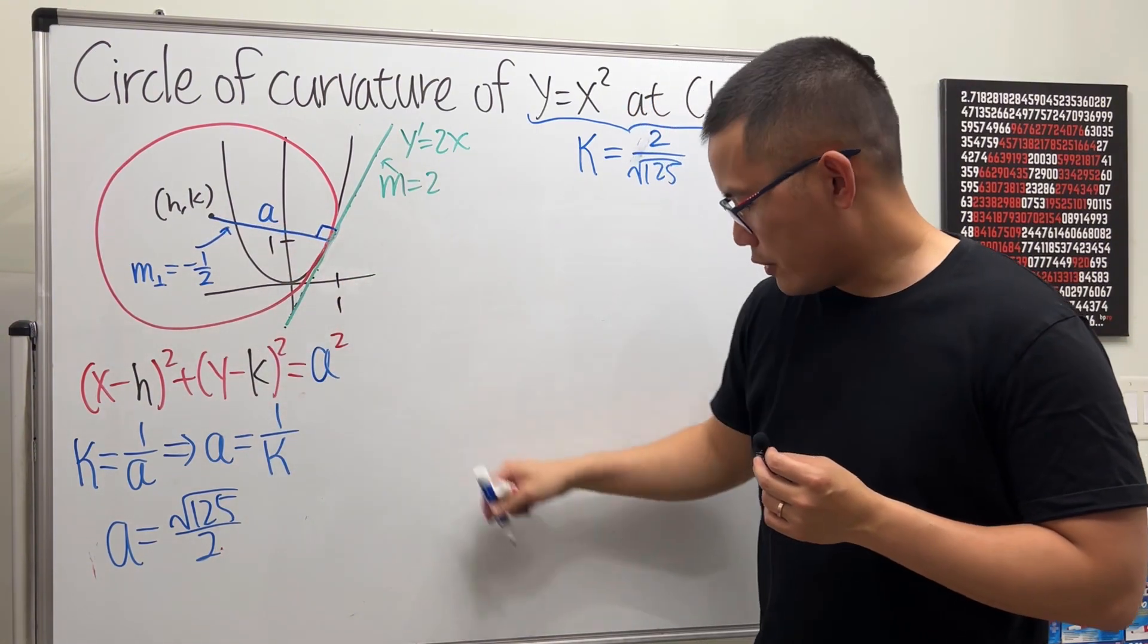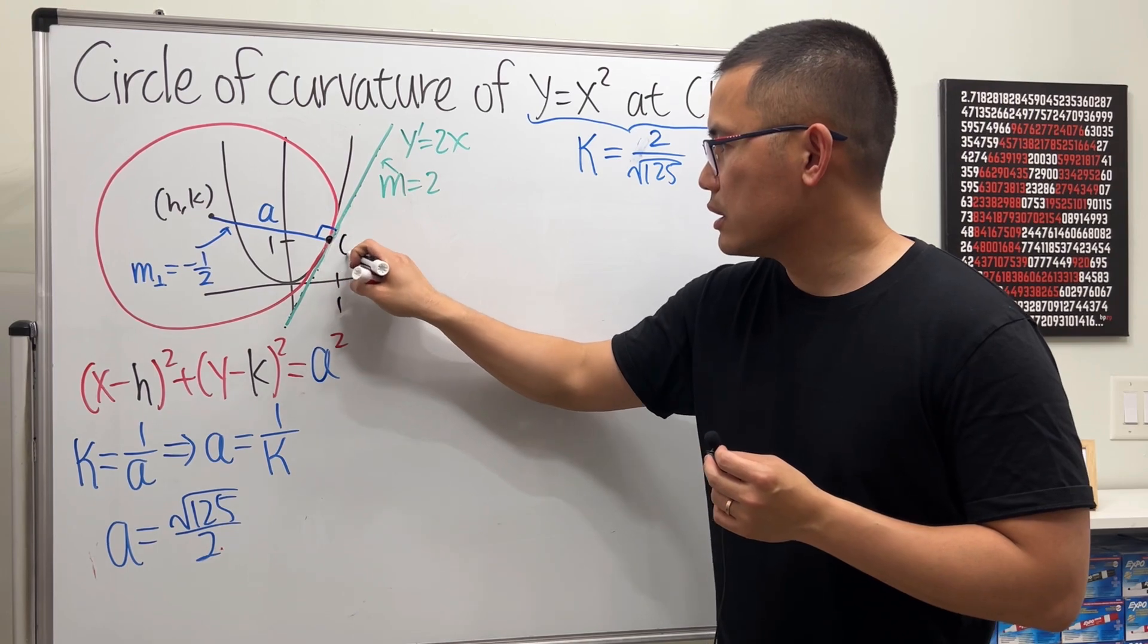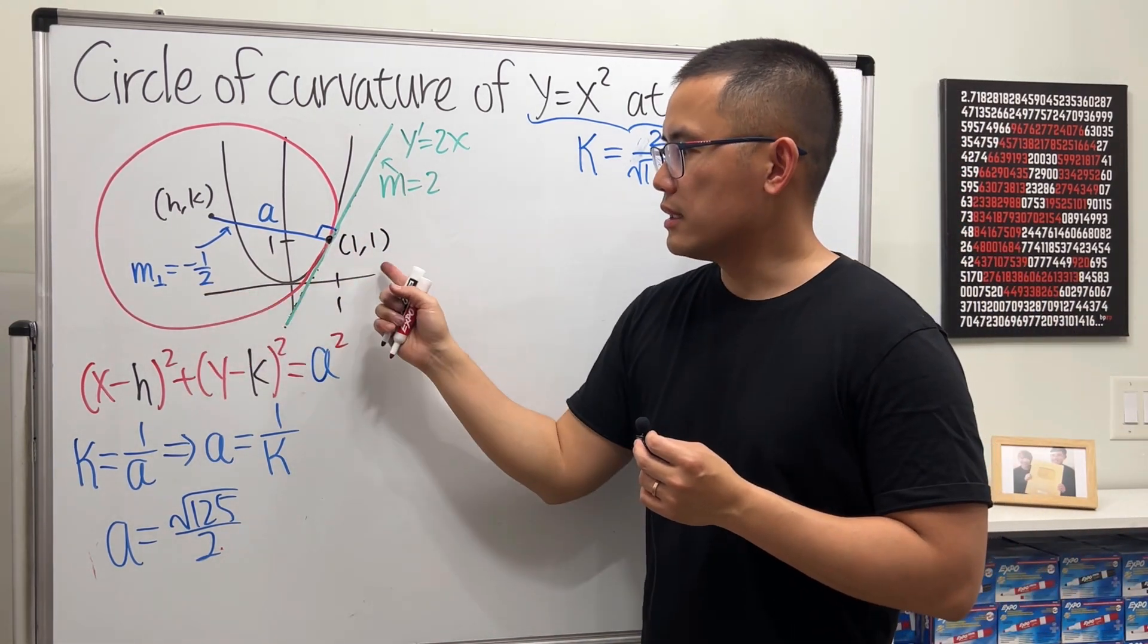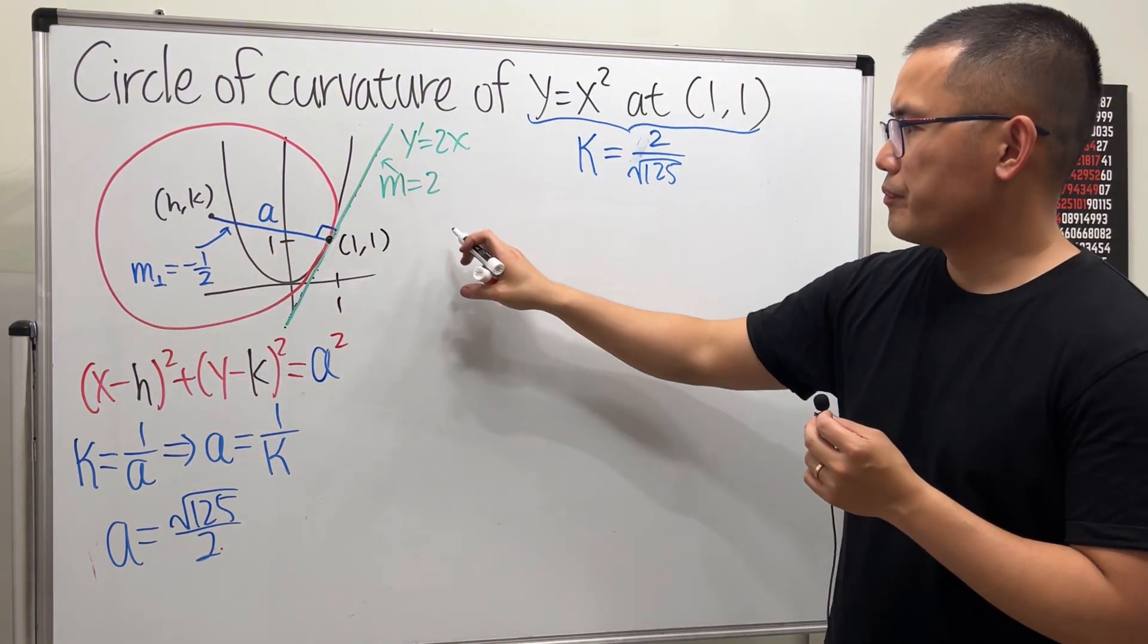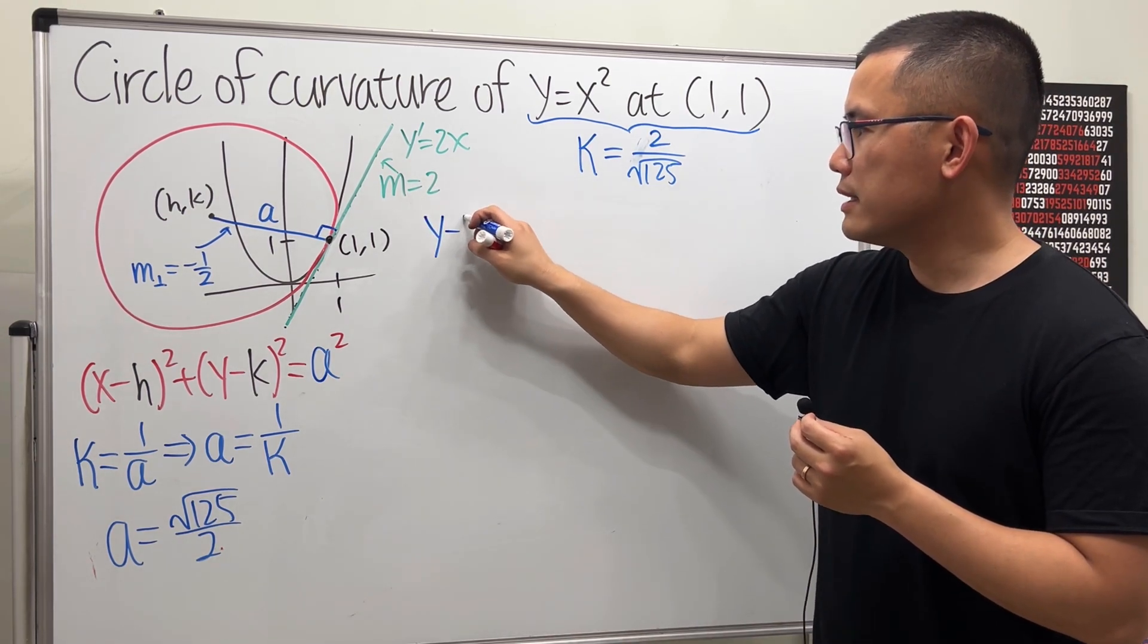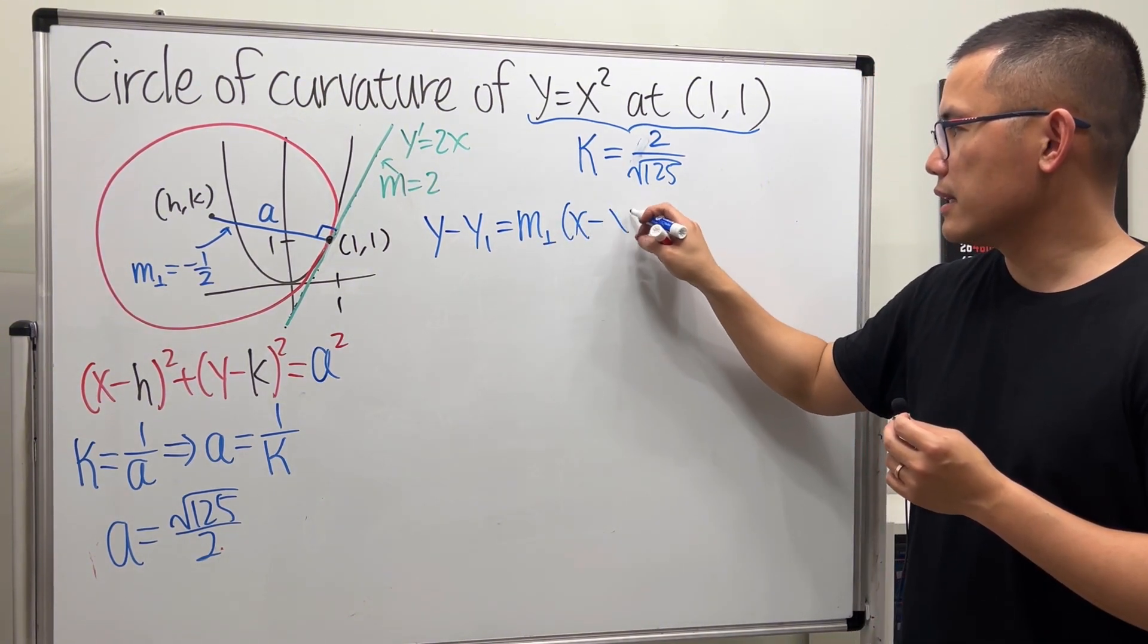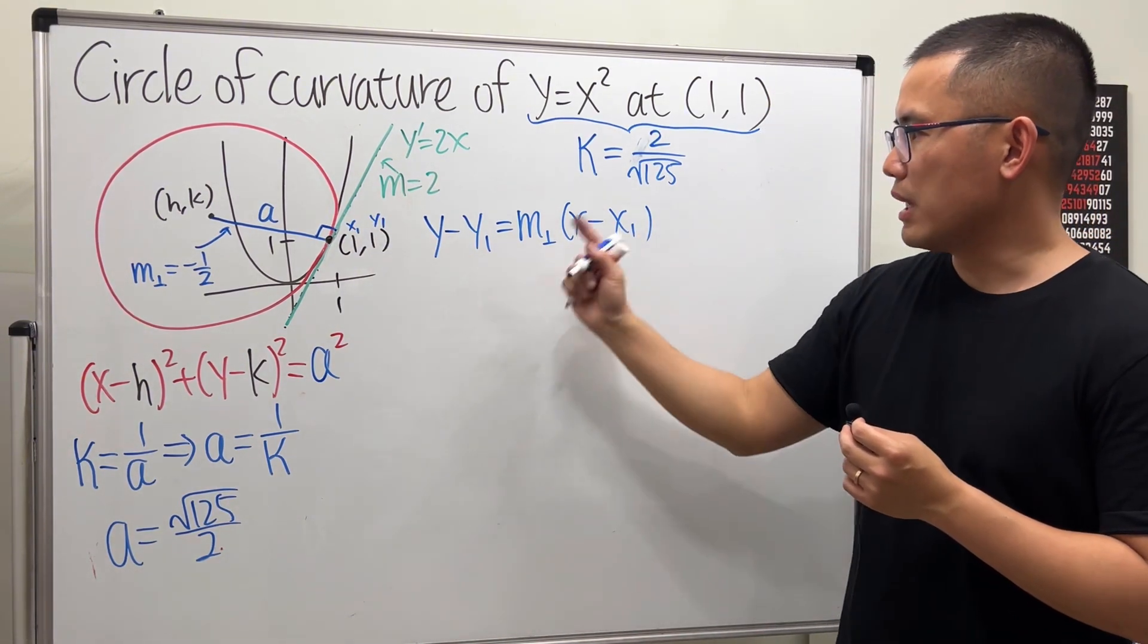So we have the slope of the blue line. And of course, we have the point here. It's just (1,1). Point and the slope. We can write an equation for this line. So let's see. Let me just write this down right here for you guys. We have y - y₁ equals the slope times x - x₁. And of course, here's the x₁, y₁. Plug in.